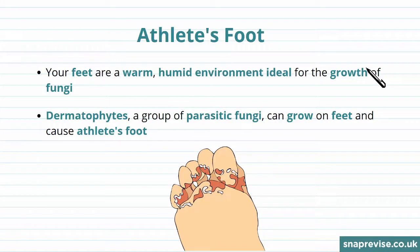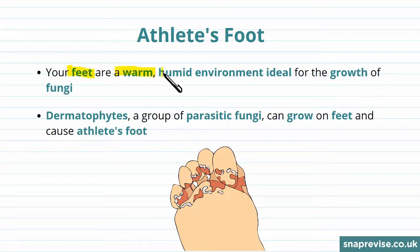So let's talk about Athlete's Foot. Athlete's Foot is a contagious fungal infection that affects the skin on the feet. It can also spread to the toenails and the hands. The fungal infection is called Athlete's Foot because it's commonly seen in athletes. Athlete's Foot affects feet as feet are a warm human environment, ideal for the growth of fungi.